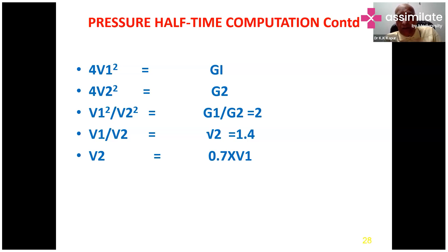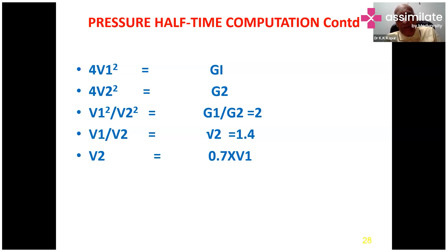One centimeter squared mitral valve area is equal to 220 milliseconds of the pressure half-time. Therefore, the mitral orifice area is equal to 220 divided by the pressure half-time. A pressure half-time of more than 220 milliseconds gives you a mitral valve area of less than one centimeter squared.